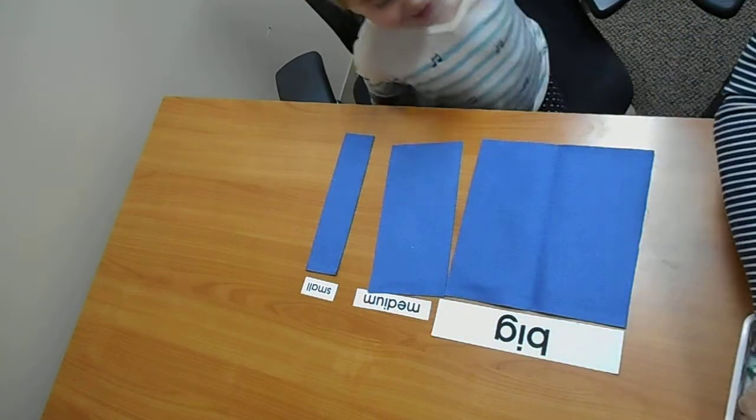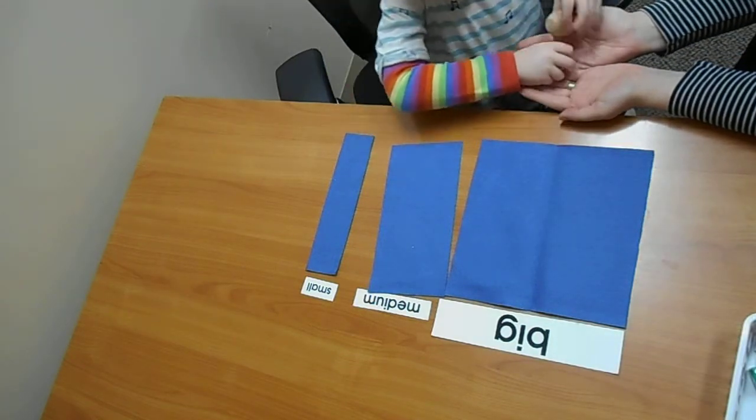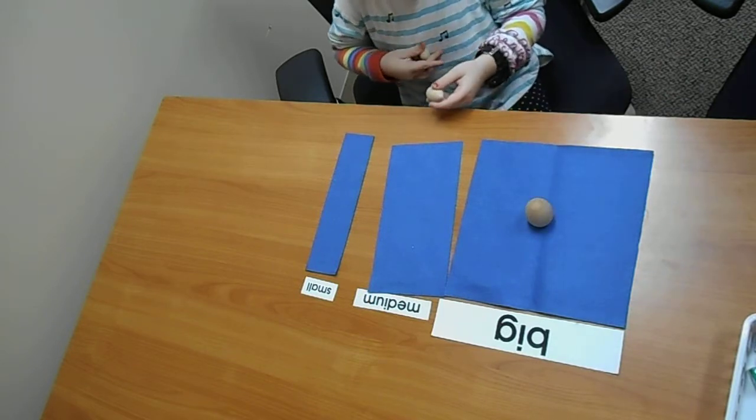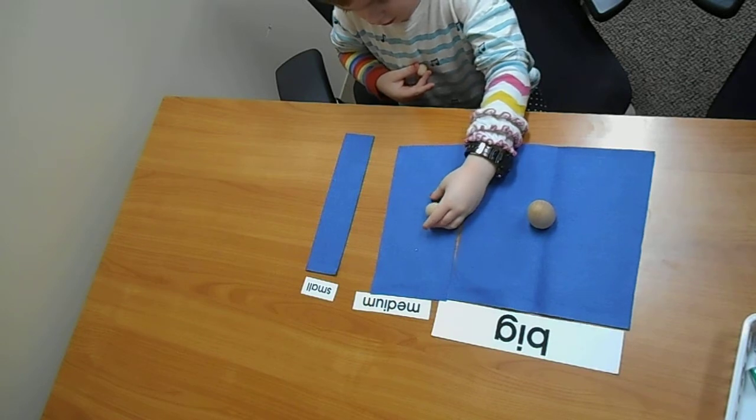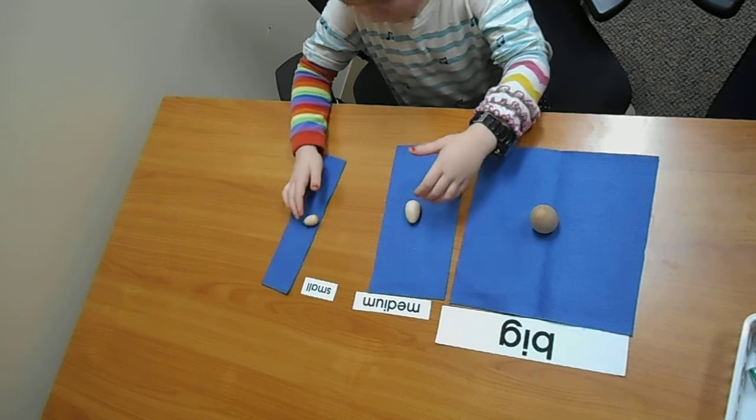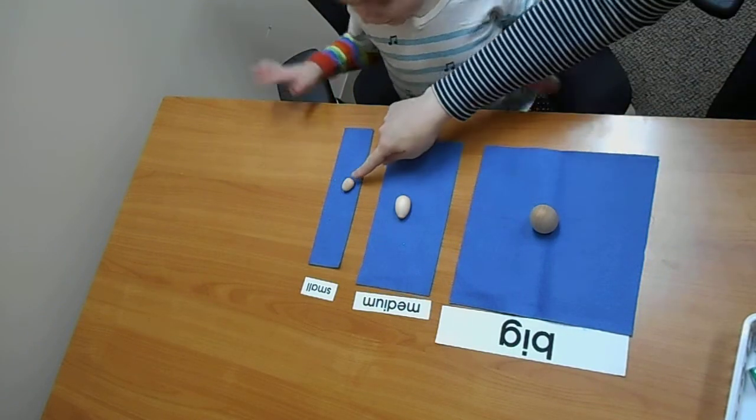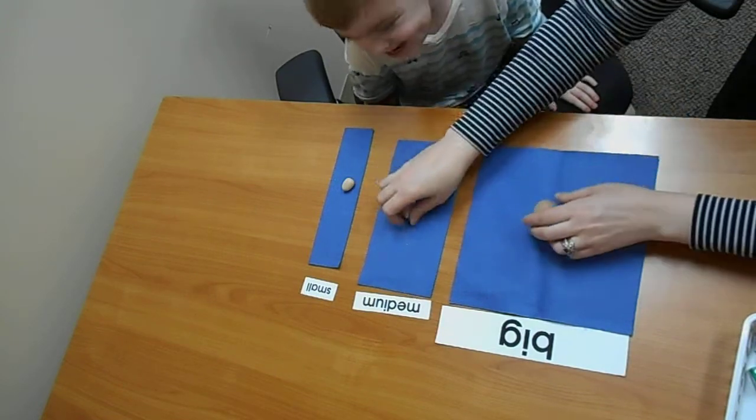Alright, let's try another one. Put these in the right spot. Good work. What's this one? Small. What's this one? Medium. What's this one? Big. You got it.